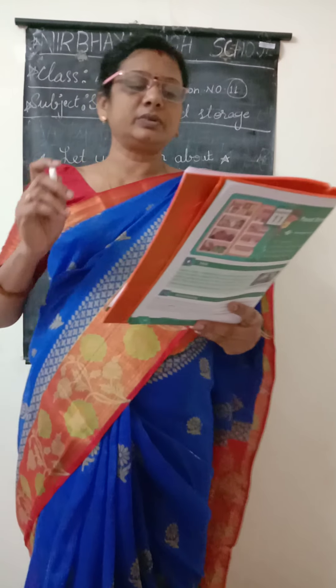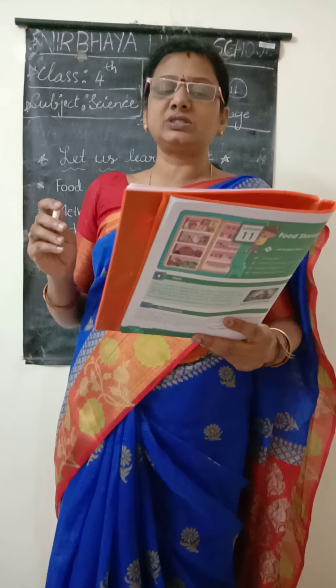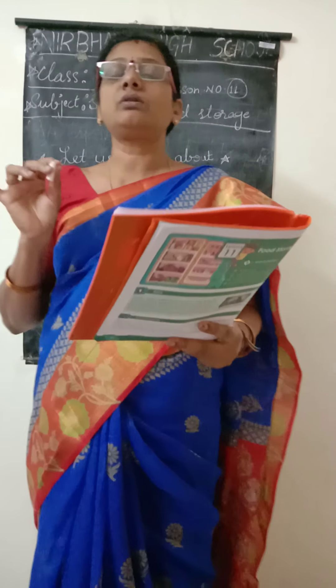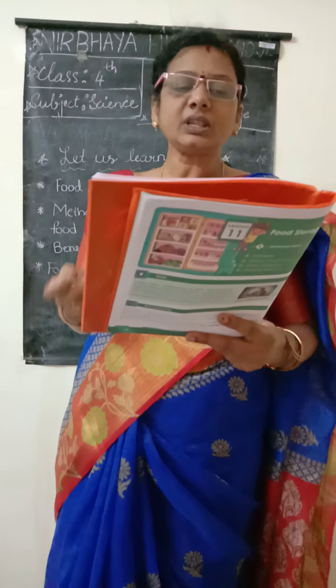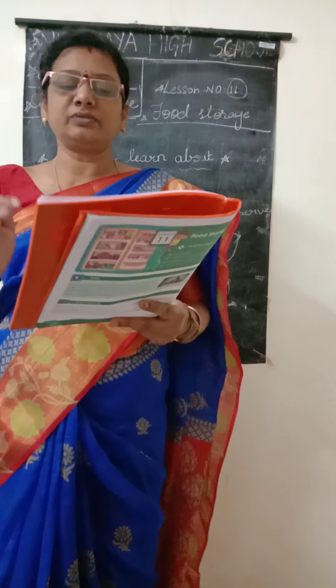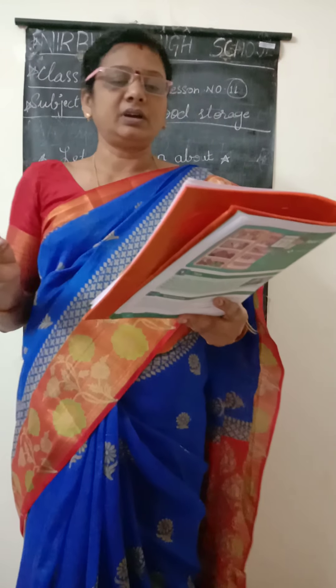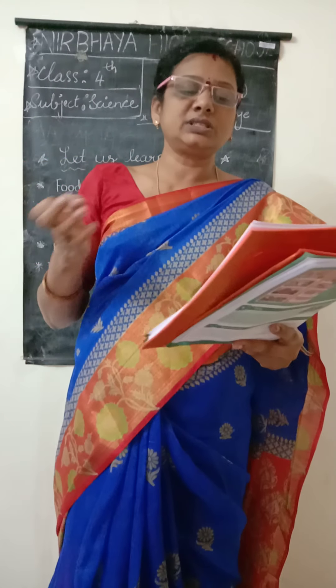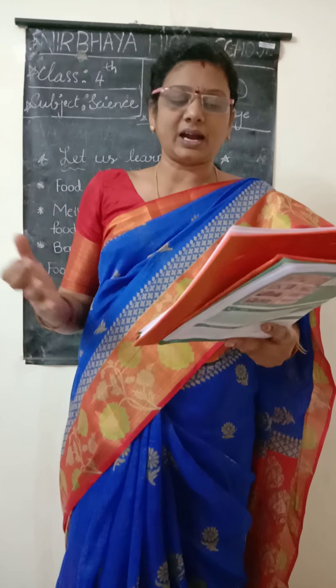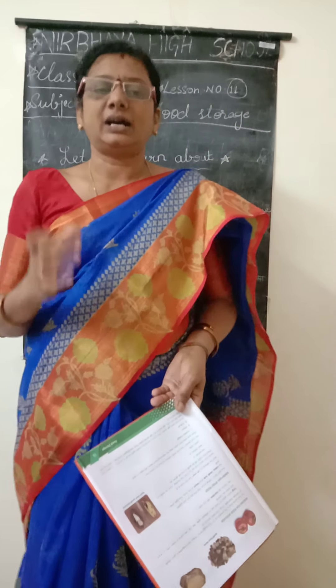Reasons for food spoilage: food spoils due to the presence of micro-organisms. The micro-organisms grow faster in hot climate. Examples include fungi and bacteria. Fungi which grow on food are of different sizes — we can see some with our eyes, but we cannot see bacteria with our eyes.